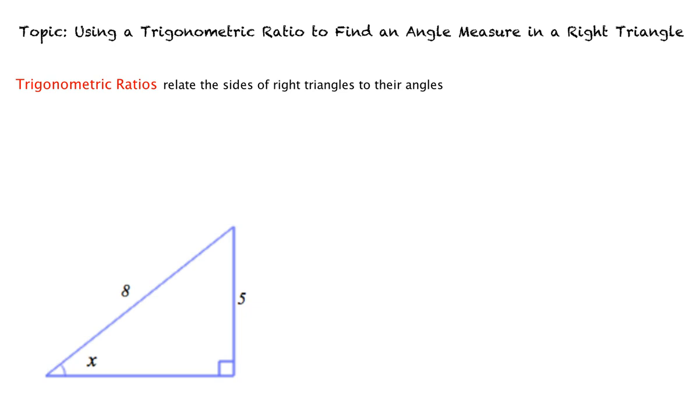We need to remember the following three trigonometric ratios to be able to solve these problems. The sine of angle x equals the length of the opposite side over the length of the hypotenuse. The cosine of angle x equals the length of the adjacent side over the length of hypotenuse. The tangent of angle x equals the length of the opposite side over the length of the adjacent side.